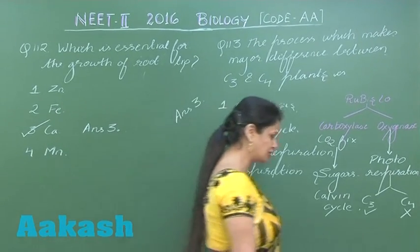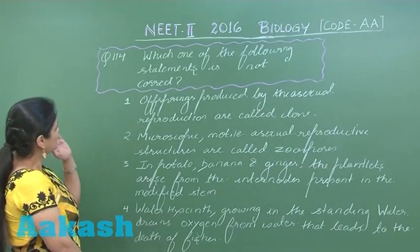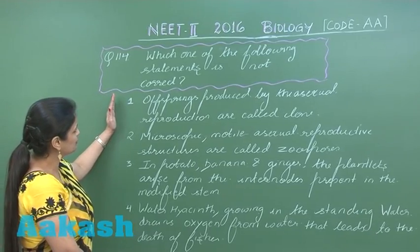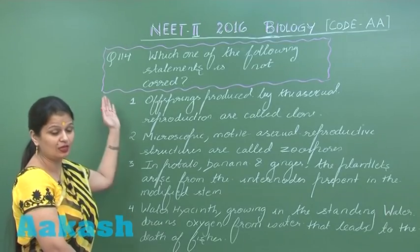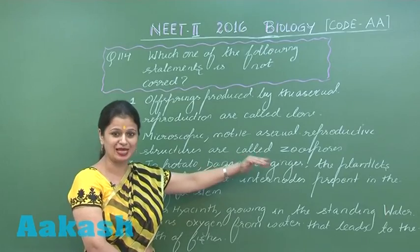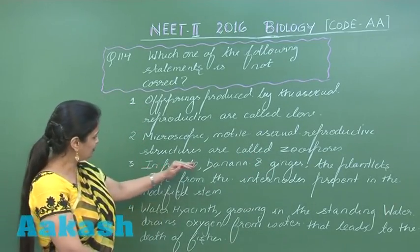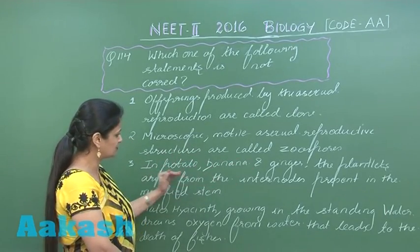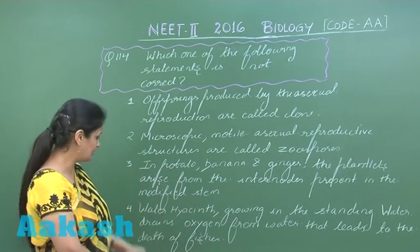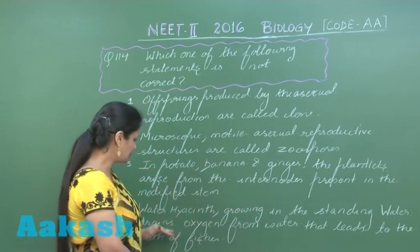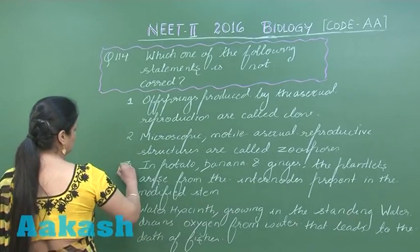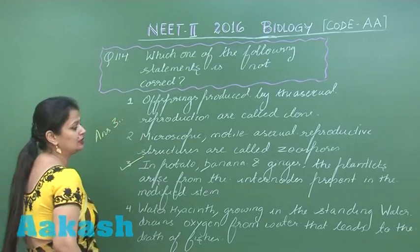Question 114 asks us to identify the incorrect option. Option 1: offspring produced by asexual reproduction are called clones — correct, they are similar morphologically and genetically. Option 2: microscopic motile asexual structures are known as zoospores or planospores — also correct. Option 3: in potato, banana, and ginger, plantlets arise from internodes — this is incorrect; they arise from nodes, where buds are present. Option 4: water hyacinth growing in standing water drains oxygen from water, leading to the death of fishes — correct. So the wrong option is option number 3; it should be node, not internode.